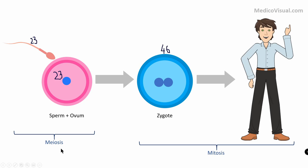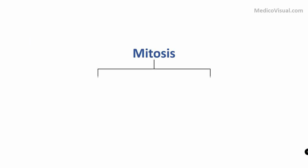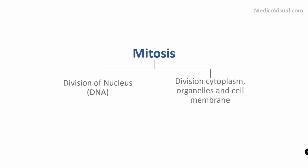Meiosis occurs only in gametes — the sex cells. First we will discuss mitosis. Usually in embryology we go in chronological order, so ideally we should discuss meiosis first, but we are discussing mitosis first because it will make meiosis easier to understand. Mitosis consists of two parts: division of DNA or nucleus, and division of cytoplasm, organelles, and cell membrane.